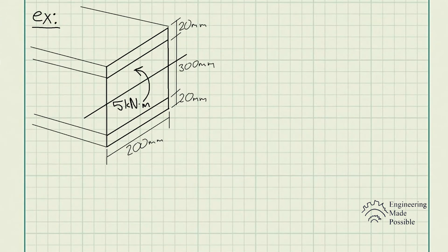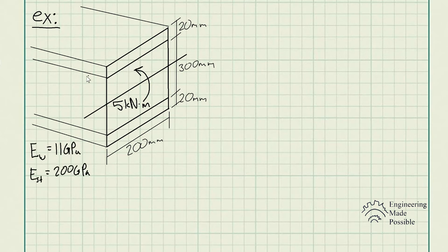For this problem, a wood beam is reinforced with steel straps at its top and bottom. Determine the maximum bending stress developed in the wood and steel if the beam is subjected to a bending moment of 5 kN·m. The modulus of elasticity of wood is 11 GPa and for steel is 200 GPa. The composite beam has wood in the center with steel plates on top and bottom.